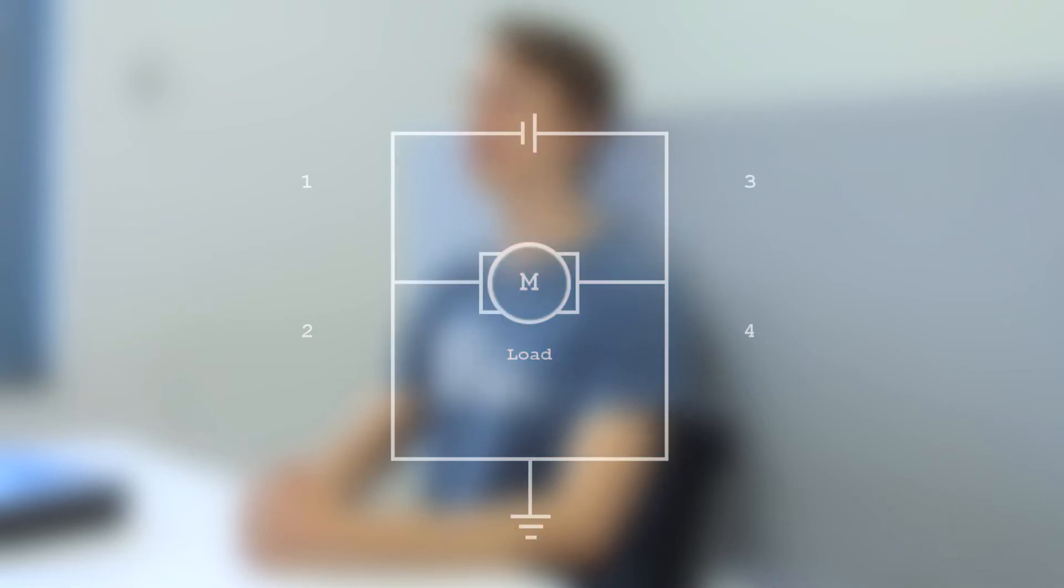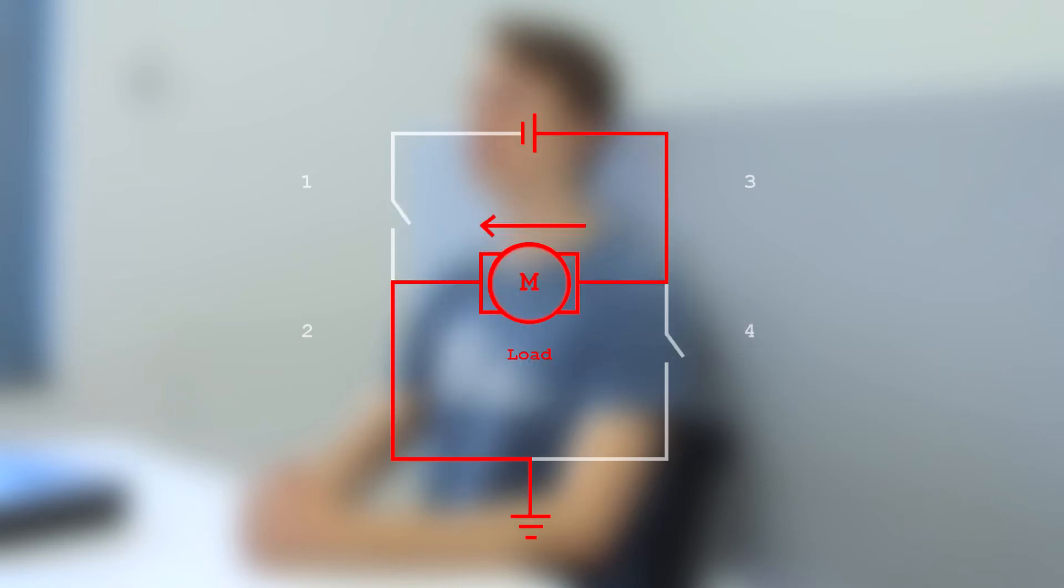On the contrary, closing switches two and three and opening one and four makes the current go from right to left.